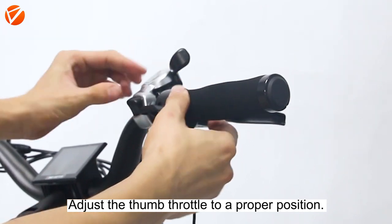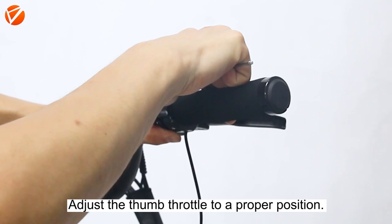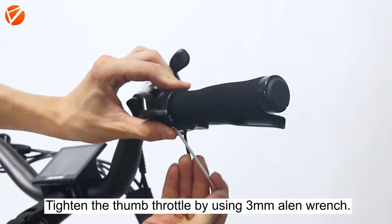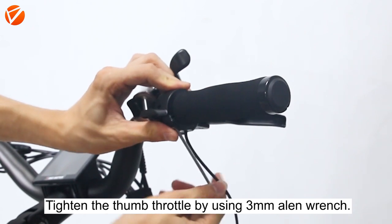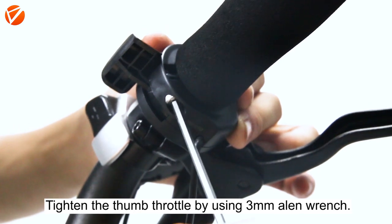Adjust the thumb throttle to a proper position. Tighten the thumb throttle by using a 3mm Allen wrench.